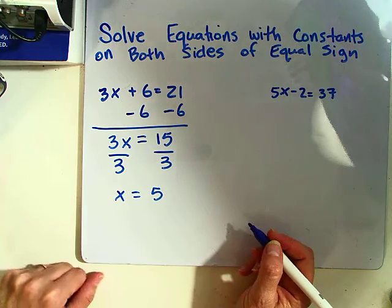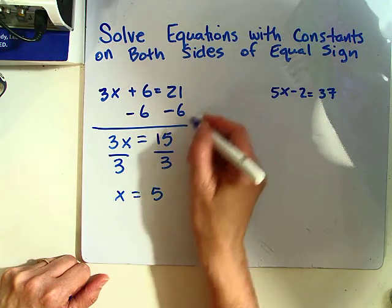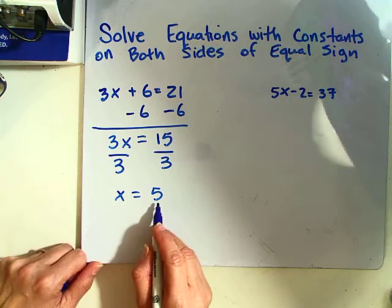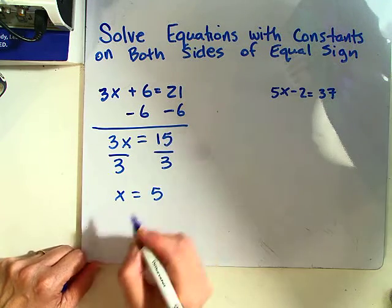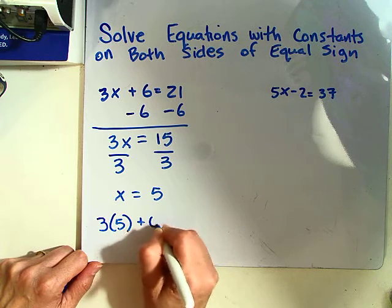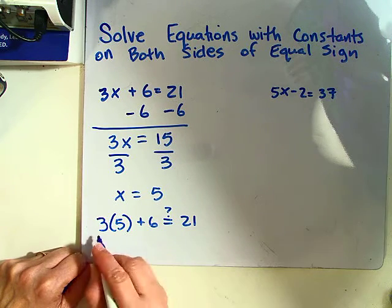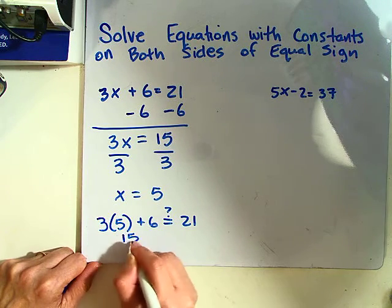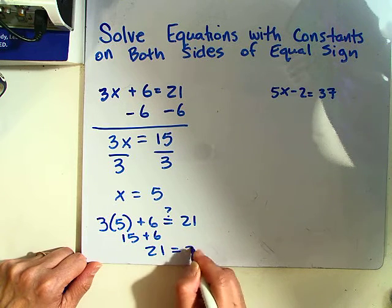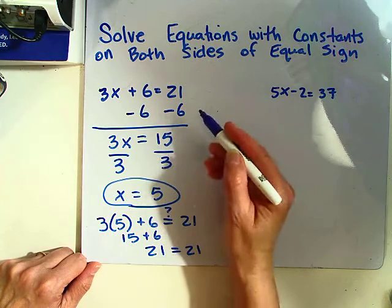The last thing we might want to do is check our work. We can plug this answer into our original equation. So 3 times 5 plus 6, does that equal 21? Well, 3 times 5 is 15, and 15 plus 6 is 21. So x equals 5 is the solution.